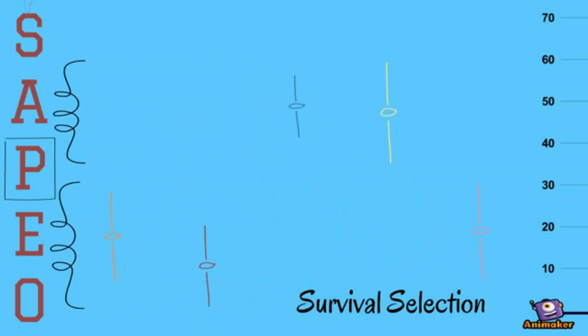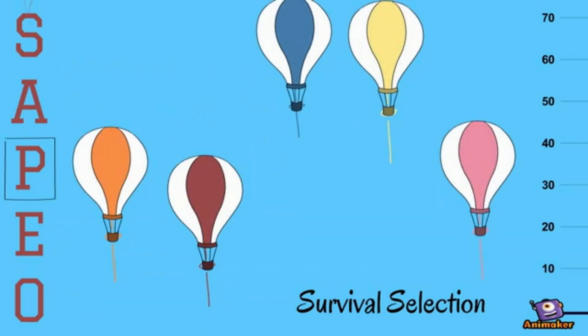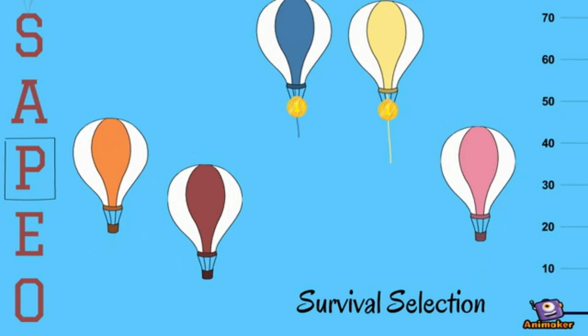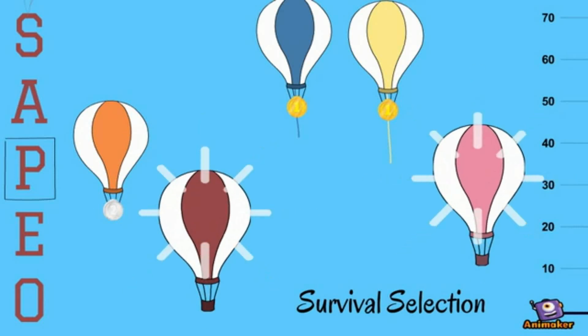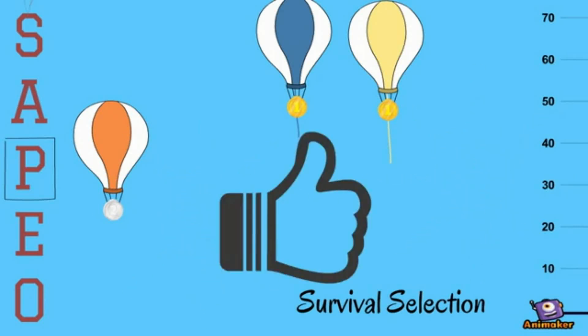Based on pairwise comparisons, we can now assign a rank to each of the solutions. Solutions on the first couple of ranks can just safely go through to the next generation. Only individuals on their critical rank need to be evaluated in order to distinguish them properly. Thus, SAPEO can arrive at the correct selection, but with less function evaluations.